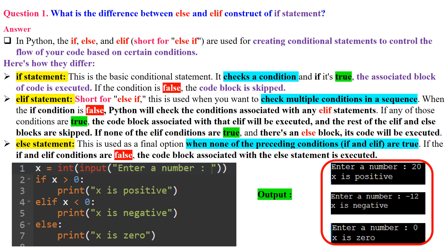Question 1: What is the difference between else and elif constructs of an if statement? In Python, the if, else, and elif (short for else-if) are used for creating conditional statements to control the flow of your code based on certain conditions. The if statement is the basic conditional statement — it checks a condition, and if it's true, the associated block of code is executed.